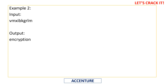The second test case has input 'vmxbk' and the output follows the same pattern — 'v' is replaced by 'e', 'm' by 'n', 'x' by 'c', and so on. Now let's discuss the coding logic for this.